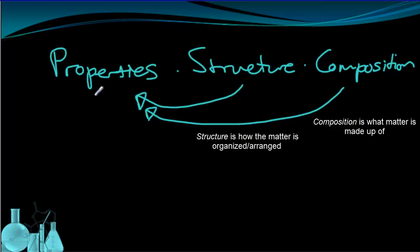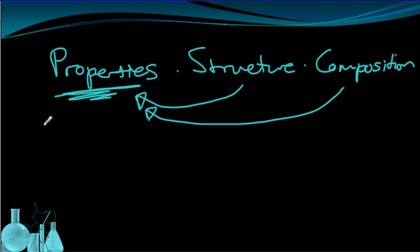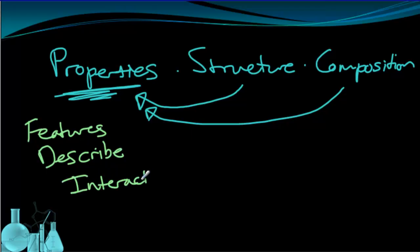So our properties tell us a number of things. Properties are kind of the big deal here. They can tell us about the features of a substance, we can use them to describe matter. But the really big deal about properties is that they also tell us how matter is going to interact with other matter. And that's going to be really big for chemistry because we're going to be interested in how substances interact with each other, how matter interacts with other matter. And properties are going to be a big part of that.